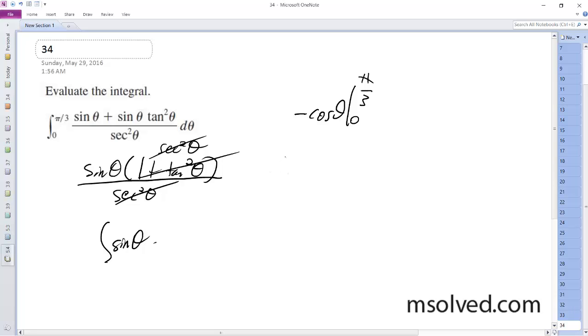Cosine of pi over three is equal to one half, so we get negative one half. And then minus the cosine of zero is one, so we end up with negative three halves.